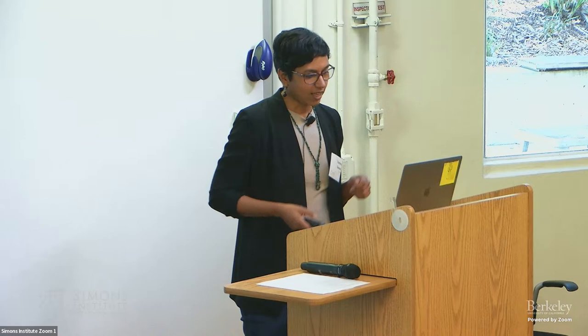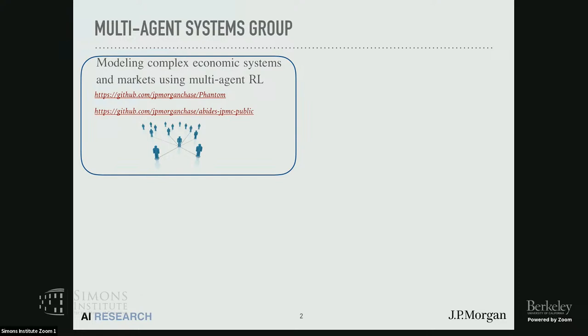We have several different groups at AI Research. We have Danielle from the cryptography group here, and also Parisa from the multi-agent systems group. A big focus for our group from the beginning has been the modeling of complex economic systems and markets. In this area, we are very much engaged in using multi-agent RL and game theoretic techniques to learn agent behaviors and the equilibria of these systems at scale. We actually open source two packages for agent-based modeling of these kinds of complex systems.